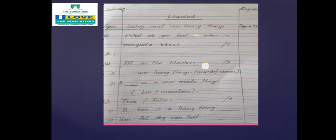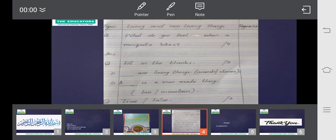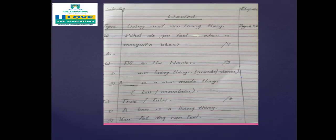Tick the correct option and write it here. A dash is a man-made thing, bus or mountain? Train, okay. True or false: a lion is a living thing. If it is true write T and if it is wrong write F. Your pet dog can feel, right T or F, okay.